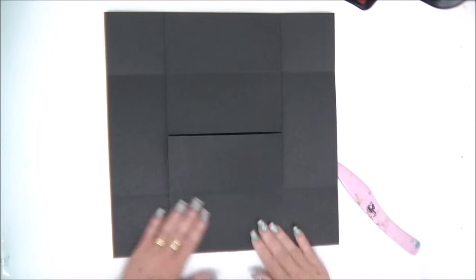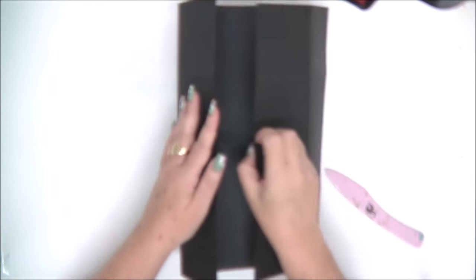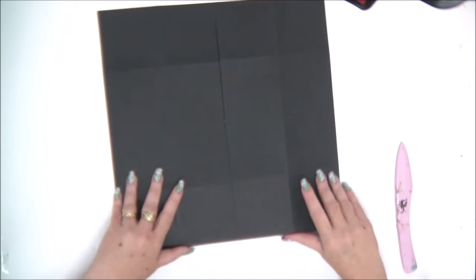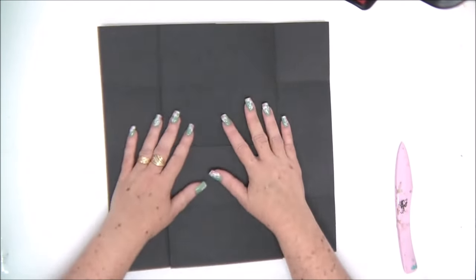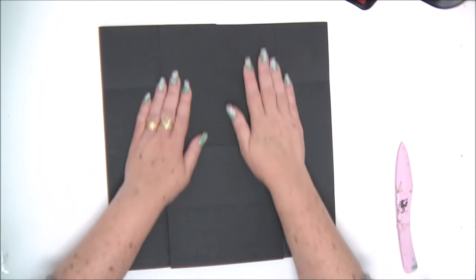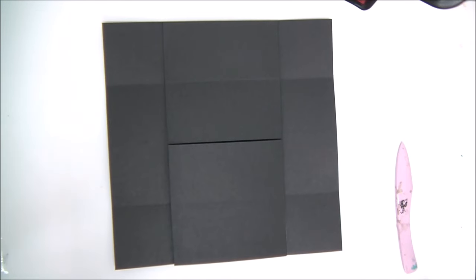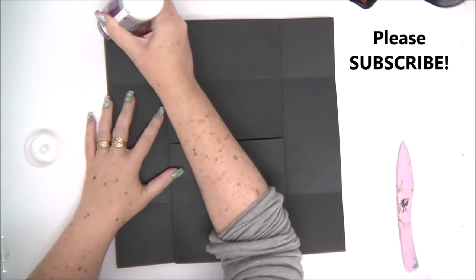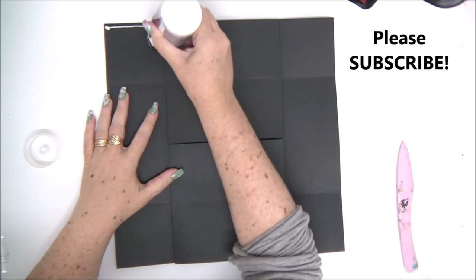We're going to attach our two next pieces. Just want to make sure that it opens properly. So now we're going to apply glue. Again, we're going to start with the four corner squares.